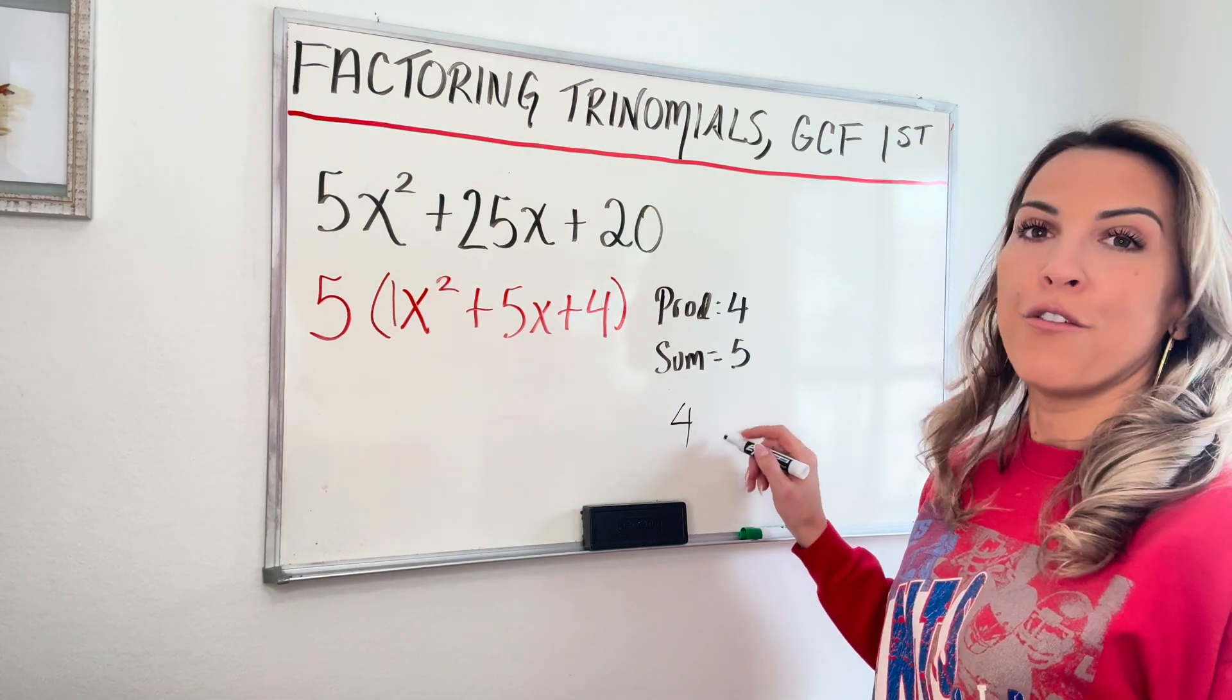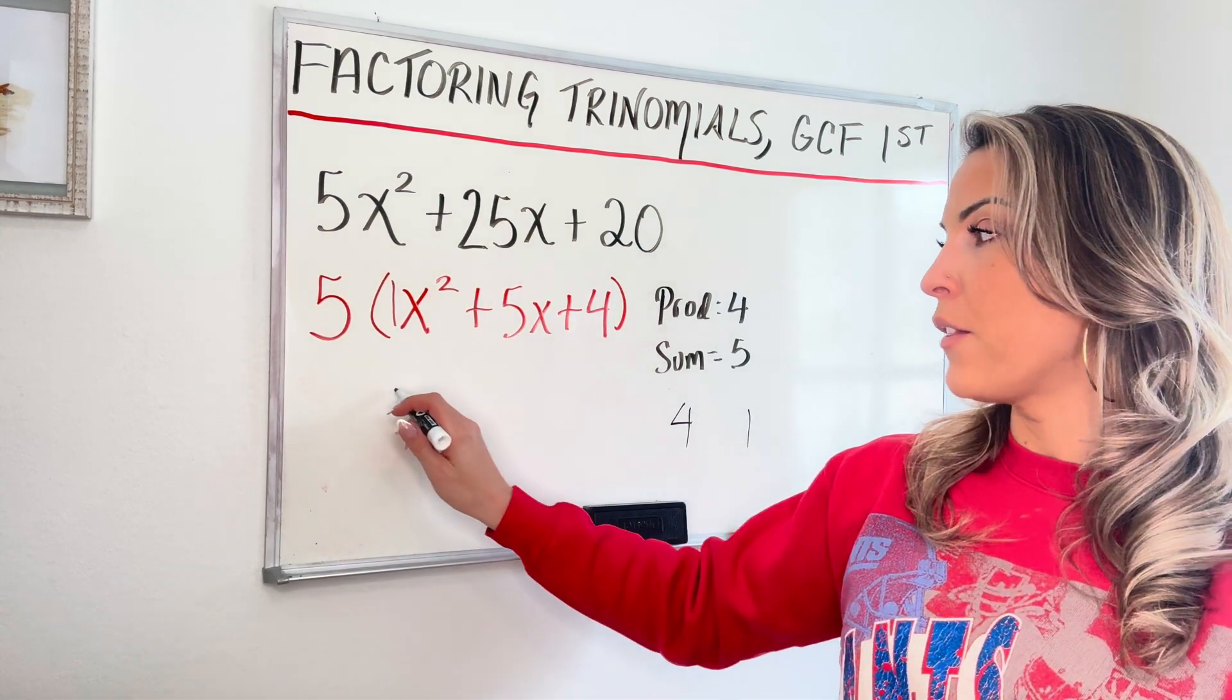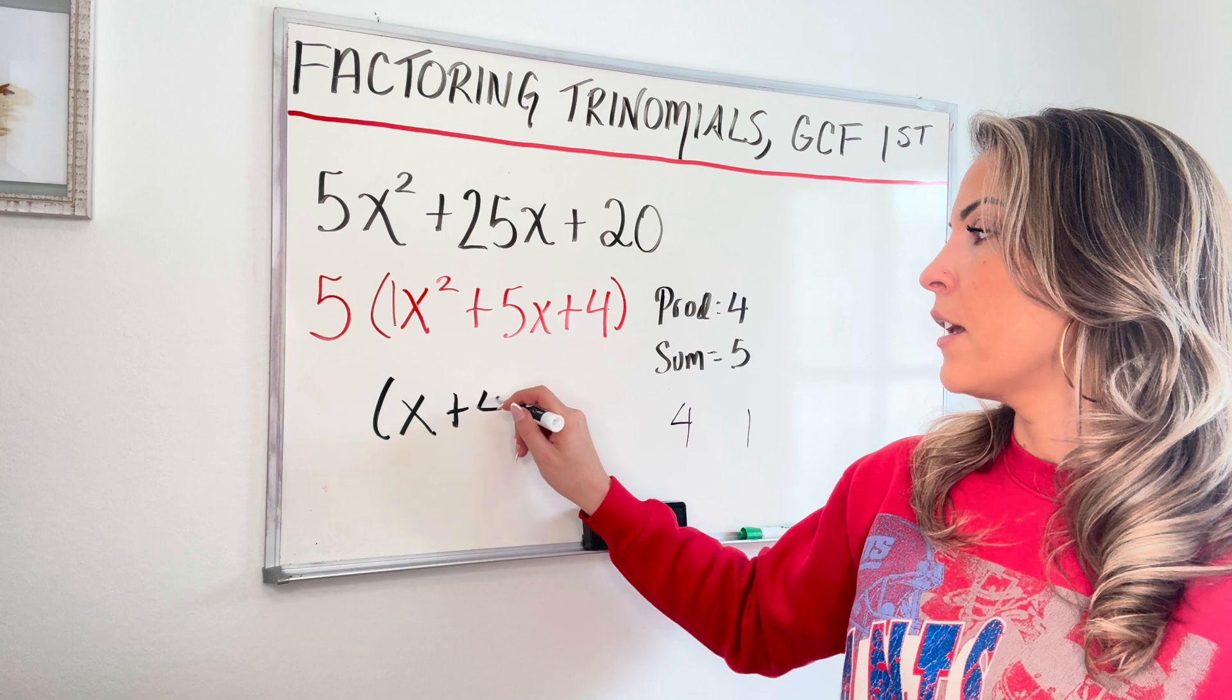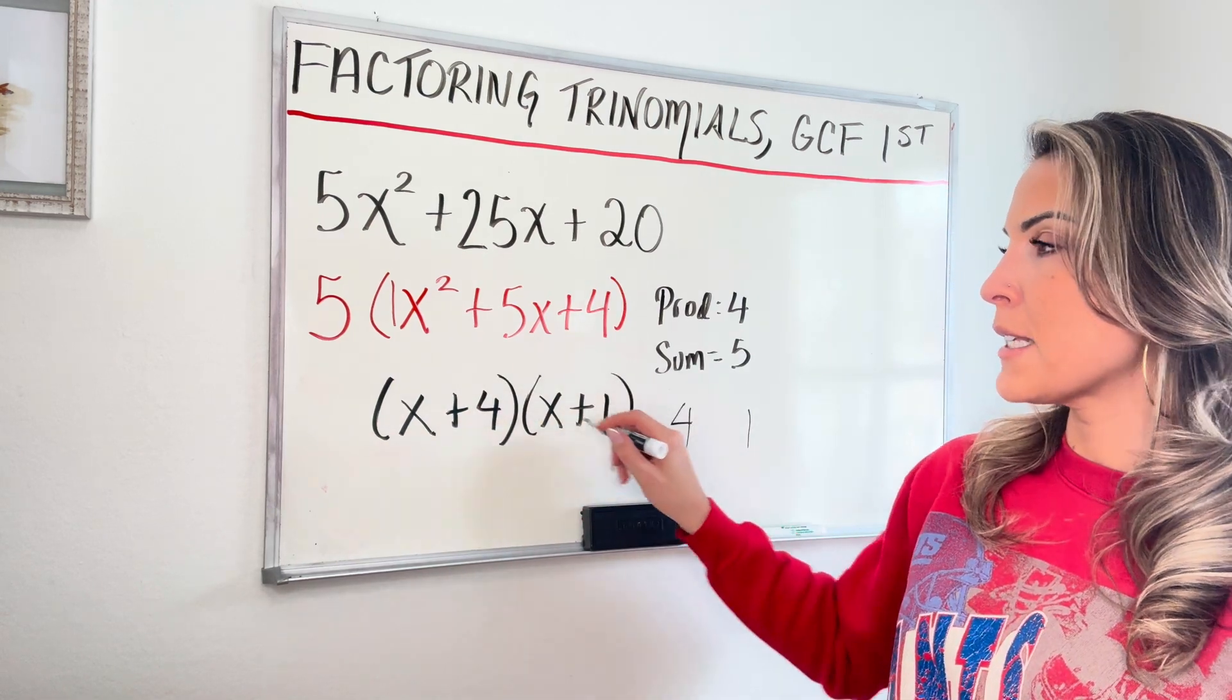So my two numbers are going to be four and one. If you remember from the previous video, once you find those two numbers, you set up your two binomials and you write x plus four times x plus one.